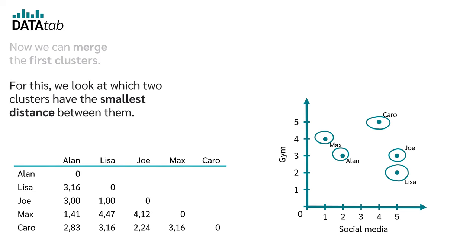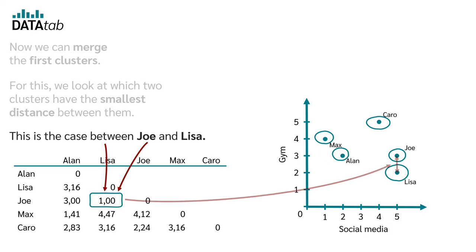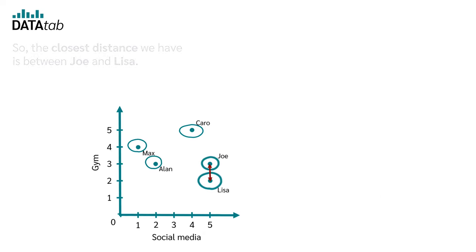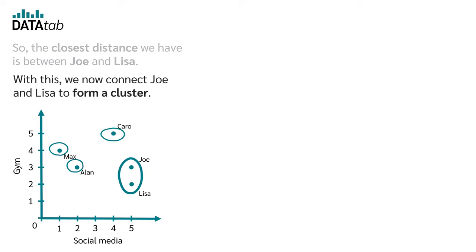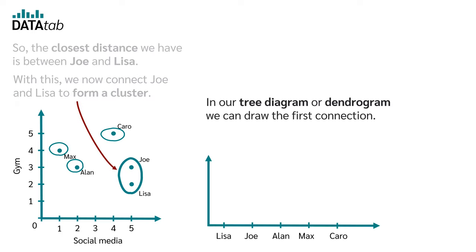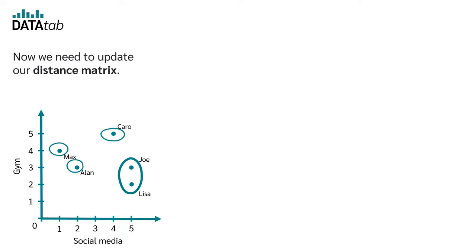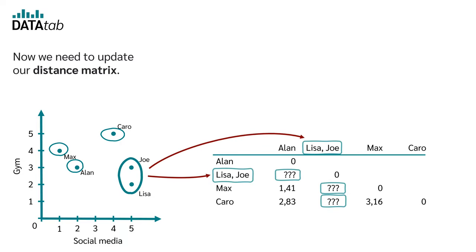Now we can merge the first clusters. We look at which two clusters have the smallest distance between them — this is the case between Joe and Lisa. So we connect Joe and Lisa to form a cluster. In our tree diagram or dendrogram, we can draw the first connection.